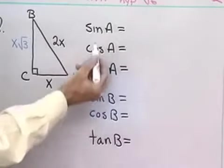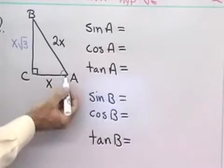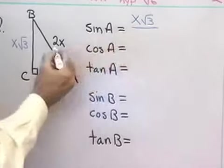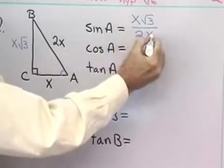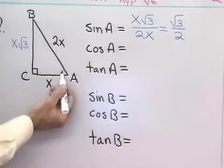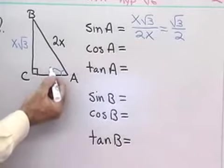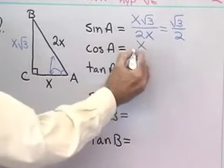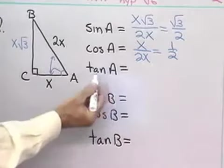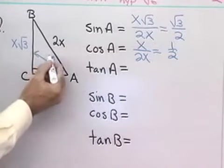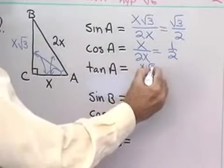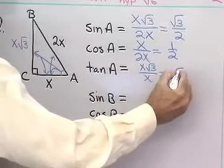Using my definitions, I want to find the sine of angle A. The sine is the side opposite divided by the hypotenuse: x square root of 3 divided by 2x. The x's divide out, leaving square root of 3 over 2. Cosine of angle A is the side adjacent divided by the hypotenuse: x divided by 2x, which equals 1 half. For tangent of A, that's opposite over adjacent: x square root of 3 divided by x, which gives square root of 3.